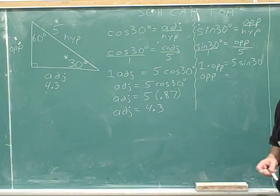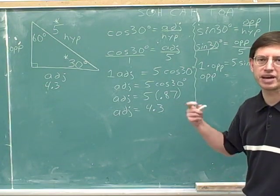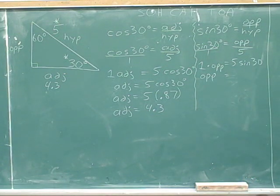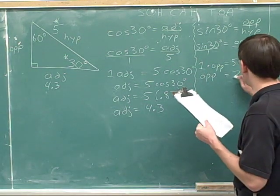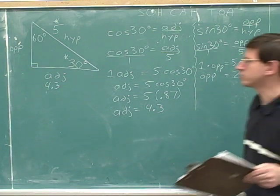It's actually a good habit to try to start learning how to use your calculator to calculate things in one step, rather than breaking them up into a bunch of separate steps. So if you type into your calculator 5 times the sine of 30, you would get 2.5. So the length of the opposite side is 2.5.